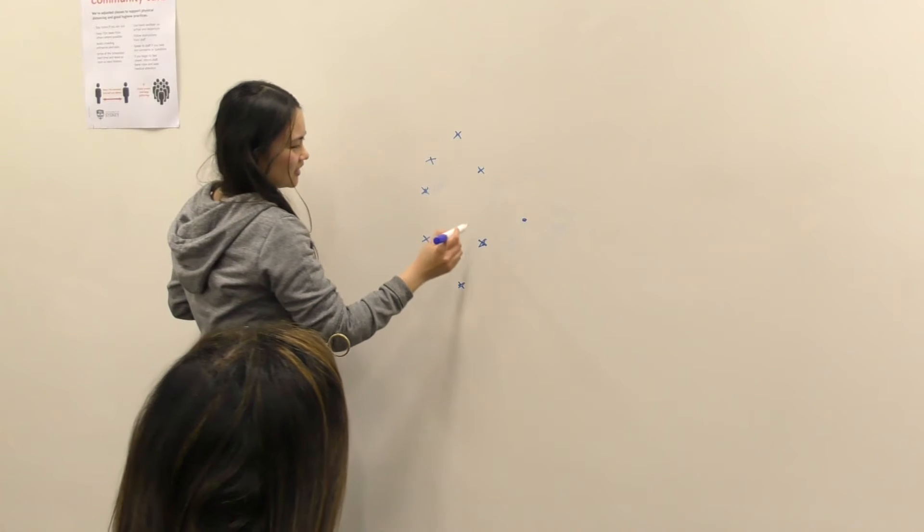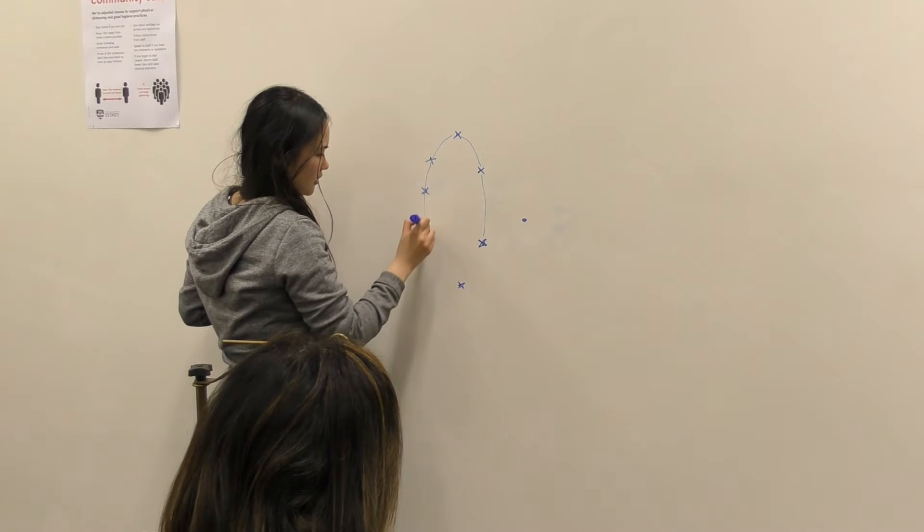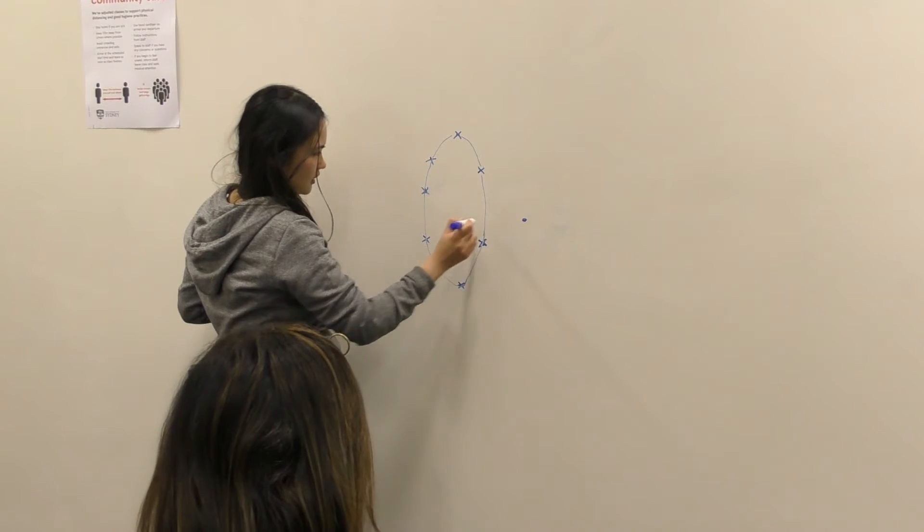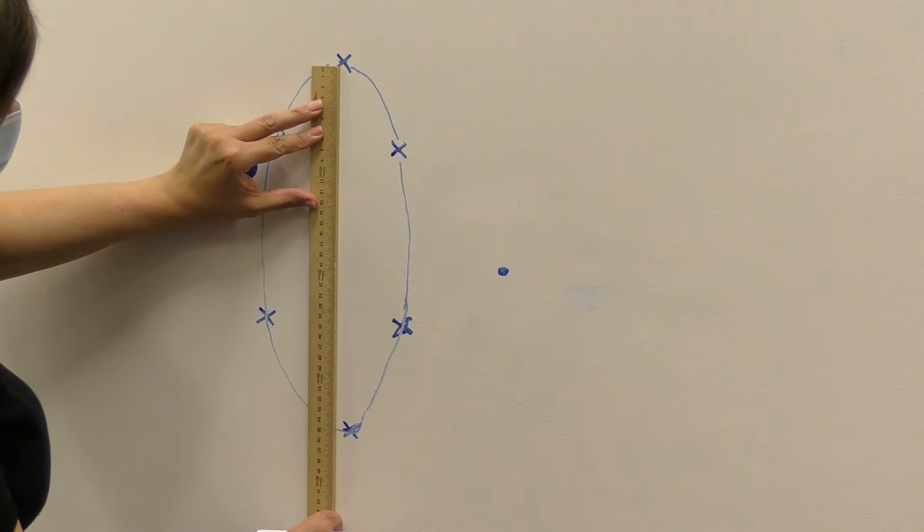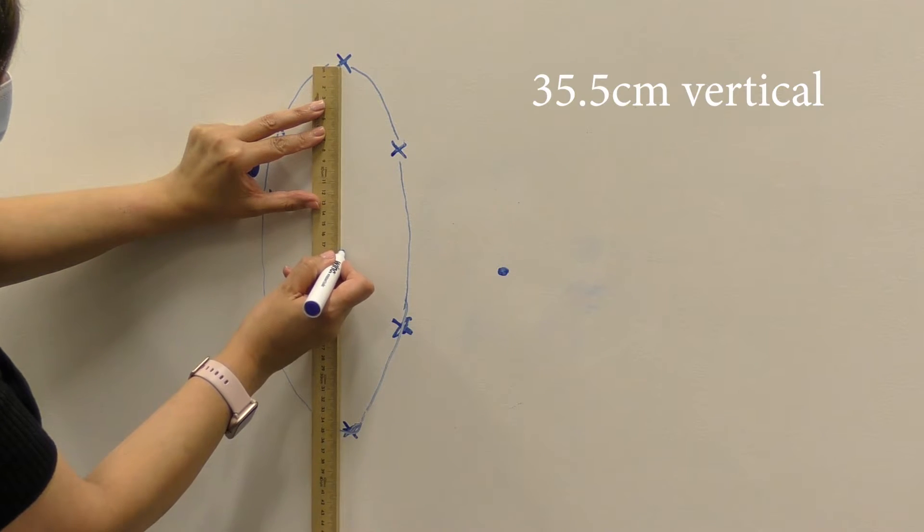And so you can see here that we've now mapped all the way around the blind spot, and so this is the portion of the visual field which falls into the blind spot. And so now we can measure this map that we've drawn and come up with an estimate for the size of the blind spot on the retina.